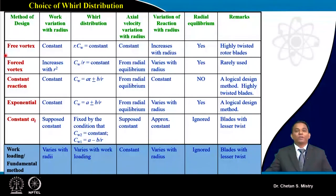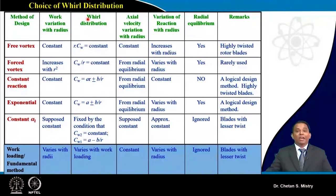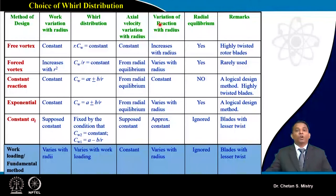The first method we discussed is the free vortex method. As discussed, during the fifties and sixties people used this method for development of gas turbine engines applied to aero engines. In this method, work variation remains constant, whirl distribution follows r·Cw = constant, axial velocity is assumed constant, and degree of reaction varies from hub to tip — satisfying the radial equilibrium equation.